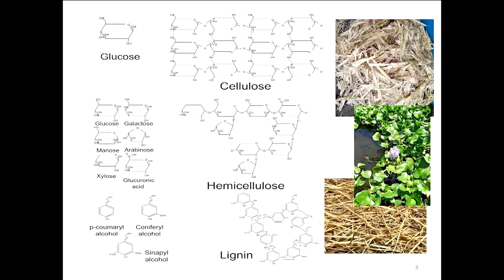Cellulose and hemicellulose are composed of different kinds of sugars that can be transformed into the bioproducts we are interested in. But to access these two polymers, we need to break the lignin barrier. Lignin's function in nature is to protect the polymers, but when we want to use the sugars contained in these polymers, we need to degrade lignin first.